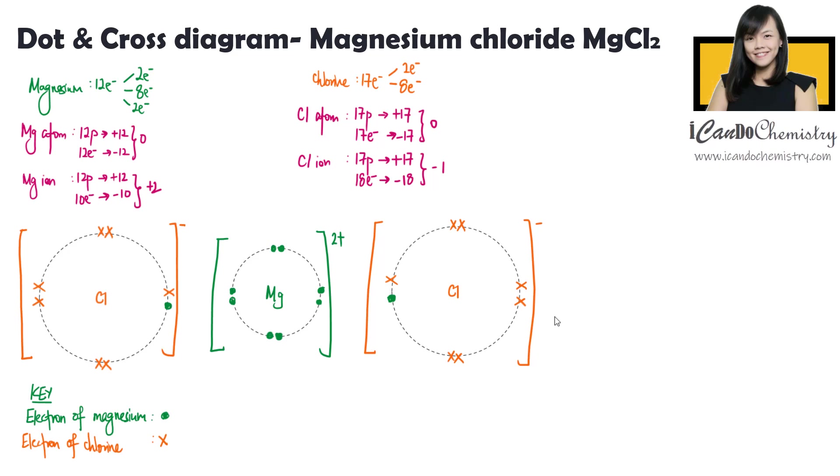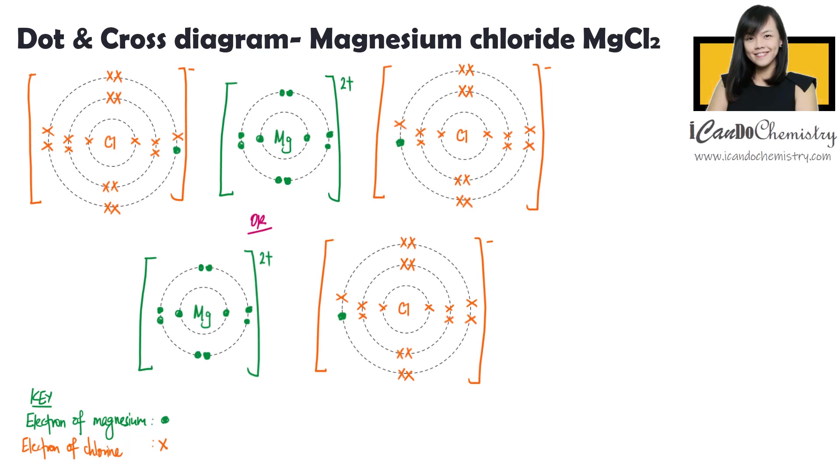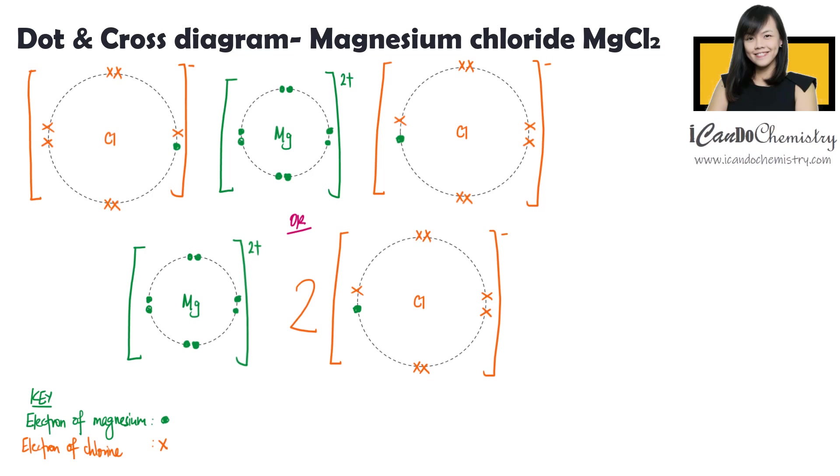You realize there are two chloride ions present in this ionic compound. So instead of drawing two chloride ions, we can draw only one and put a 2 in front of the chloride ion. If we are asked to draw only the outermost electrons, instead of showing two chloride ions, you can draw this instead.